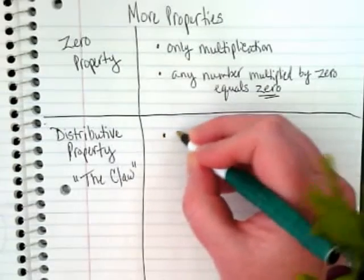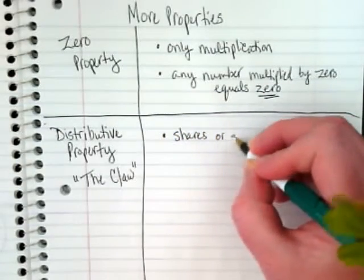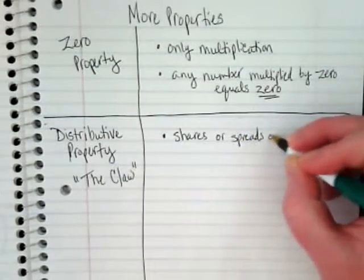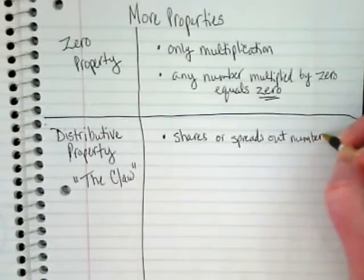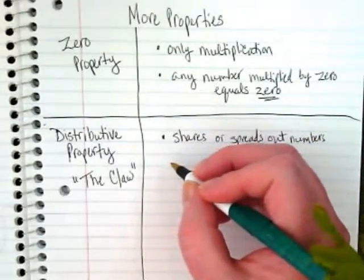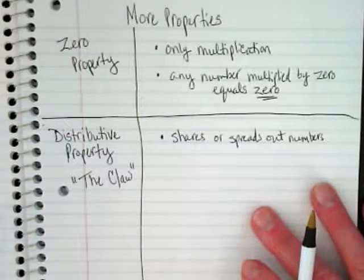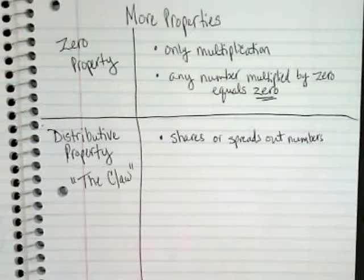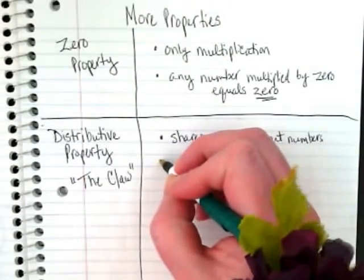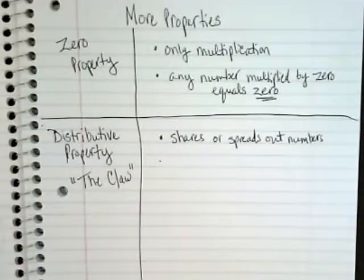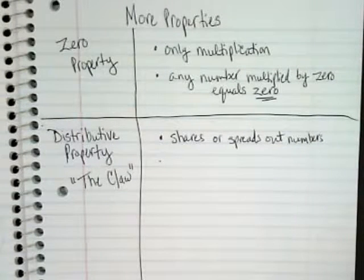What the distributive property does, it shares or spreads out numbers. Sometimes kids confuse this with the associative property because it has parentheses in it. But remember, the associative property was grouping numbers that work well together. This is sharing things out. And if you look at the poster I put up for this, there's the picture of the UPS truck and the guy with the packages. What does the UPS truck do? Delivers packages to all of the houses that has packages coming. They're sharing out or spreading out the packages.